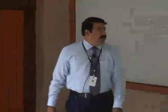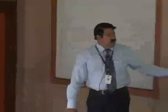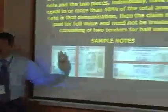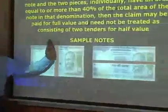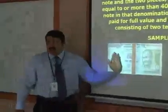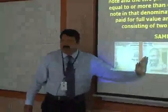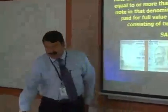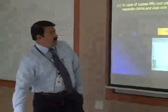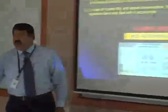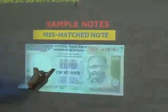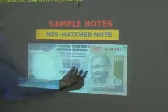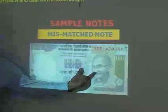And this one — this was half value: two pieces of ₹50 and ₹100 rupees. Because a small portion is missing and each piece is more than 40%, each gets ₹50 — total ₹100 rupees. And here also, a mismatch note. Earlier it had no value. Now we get full value because this side is more than 40%, so ₹50 rupees; this side is also more than 40%, so ₹50 rupees — full value. This side of the note is more than 80%.